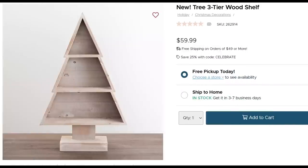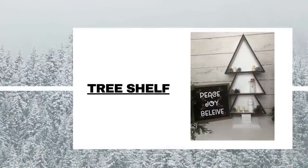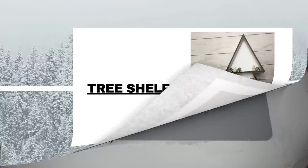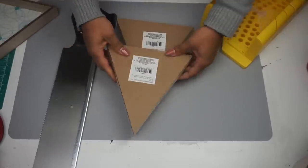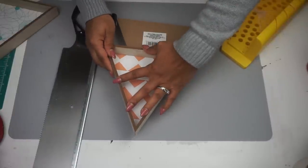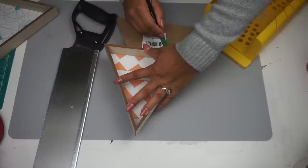Next up, we have this really pretty three-tier wood shelf shaped like a Christmas tree. I absolutely love it and I really want it. So instead of paying $60 for it, I'm going to use Dollar Tree products. So I got three of these triangle shapes from Dollar Tree and I'm going to use my miter saw box to cut these down.